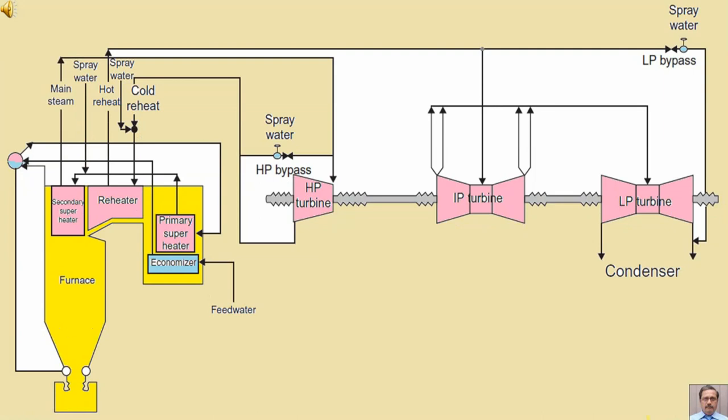In this diagram, we can see the HP bypass system. The HP bypass system is connected between main steam and cold reheat steam. It means it is bypassing the high pressure turbine. That is why it is called HP bypass.